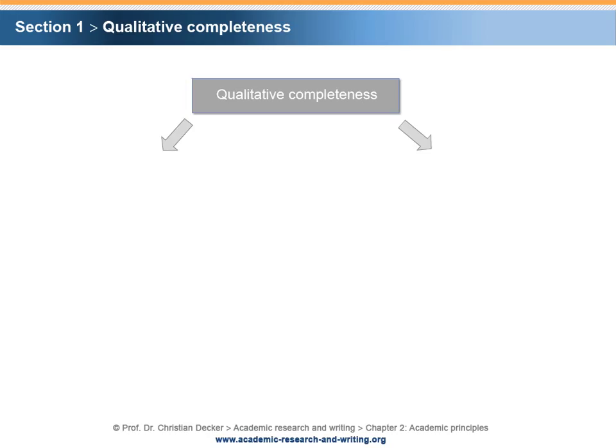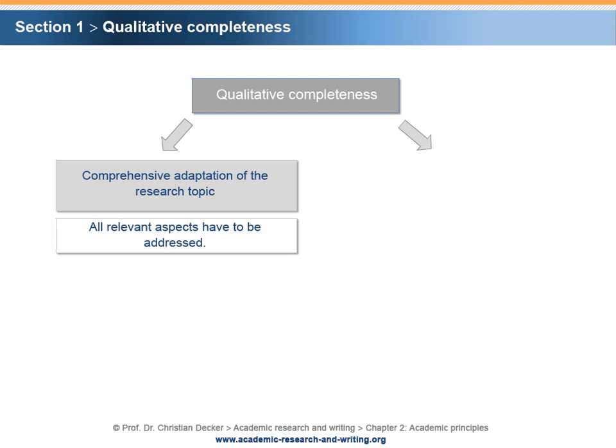The principle of completeness implies qualitative and quantitative completeness of your research work. Qualitative completeness has two aspects. First, it implies a comprehensive adaptation of the research topic. All aspects that are relevant in order to answer the research question have to be addressed.